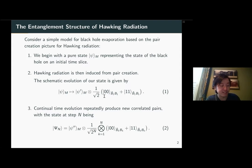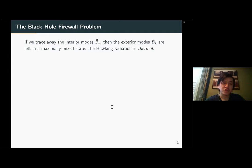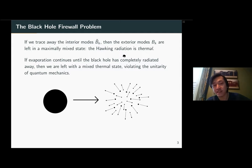The entire black hole evaporation process takes place over many time steps. After n time steps, the overall state is given by appending n pairs of these black hole EPR pairs consisting of outgoing radiation and interior partner modes. This immediately gives us the traditional black hole information problem: if we trace away the interior modes b̃, the exterior modes are left in the maximally mixed state, corresponding to the usual statement that Hawking radiation is completely thermal.